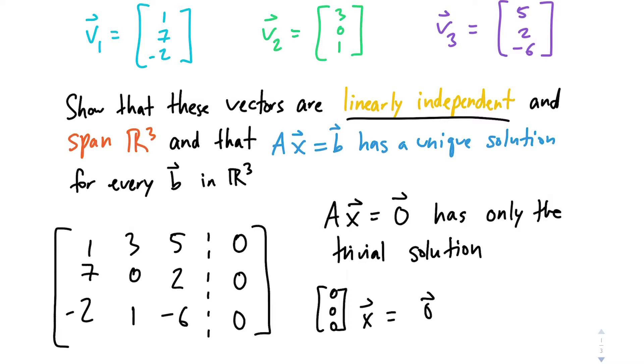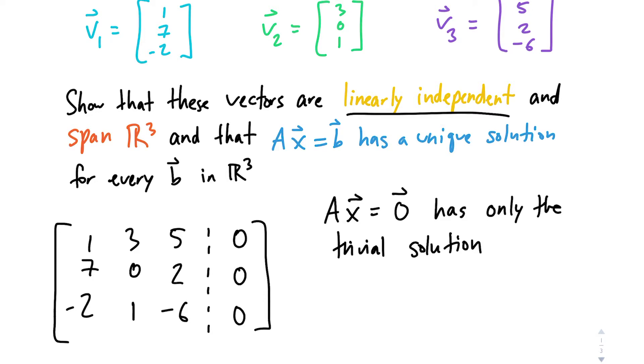And so if something is linearly independent, that means that none of the vectors that we provided were redundant. We needed every single one of them. For linearly independent sets of vectors, you can't represent one of the vectors with a linear combination of the other two vectors. So as long as our solution for this system of equations is X1 equals 0, X2 equals 0, X3 equals 0, we know that our vectors are linearly independent.